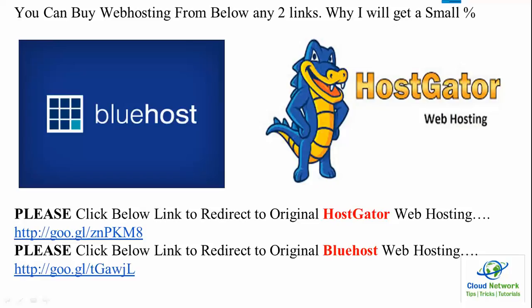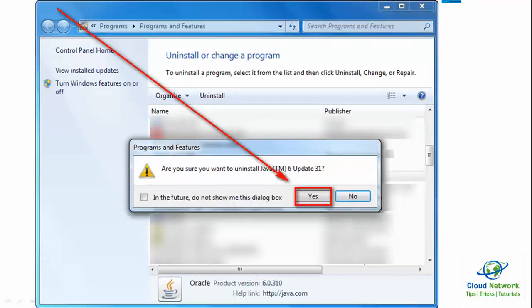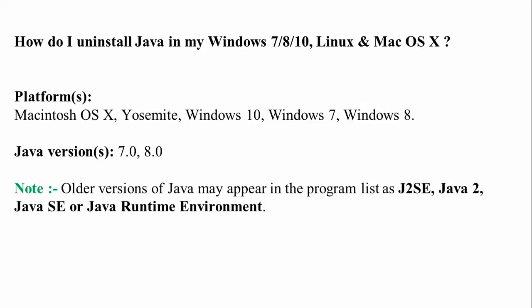So, how do you uninstall Java in Windows? First, note that older versions of Java may not appear in the programs list. If you go to the programs list, you will find the Java name listed as J2SE, Java 2, Java SE, or Java Runtime. You will find these kinds of names there in the program list.